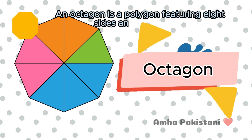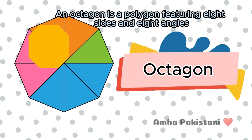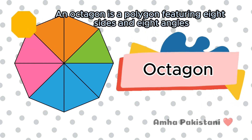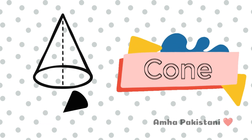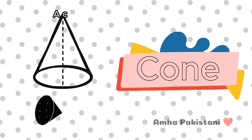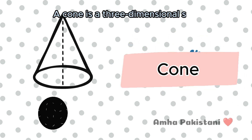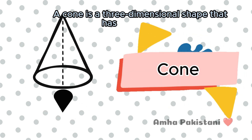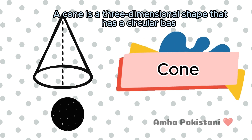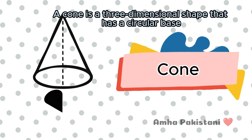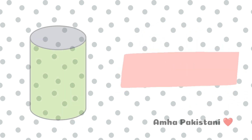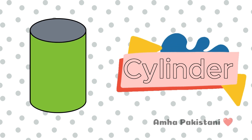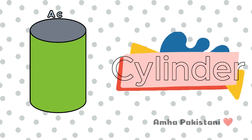Octagon. An octagon is a polygon featuring eight sides and eight angles. Octagon. Cone. A cone is a three-dimensional shape that has a circular base. Cone.